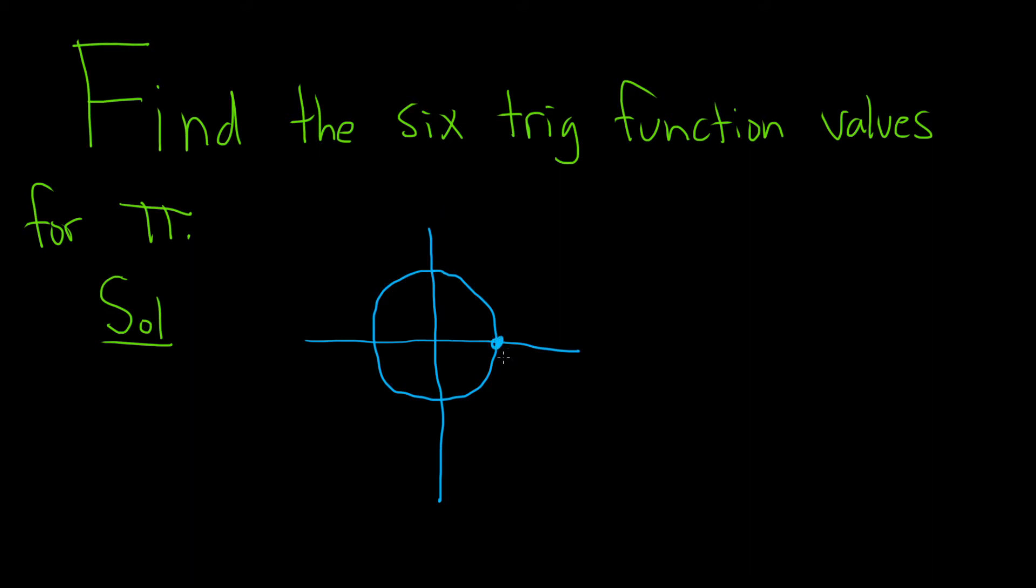So this point here would be 1, 0. This point here is 0, 1. This one here is negative 1, 0, because the radius is 1. And this one here would be 0, negative 1.